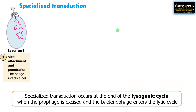The next type is specialized transduction. As the term suggests, here a specific fragment of DNA near the integration site is transferred. It occurs at the end of the lysogenic cycle when the prophage is excised and the bacteriophage enters the lytic cycle.